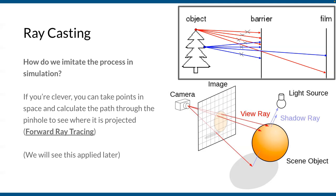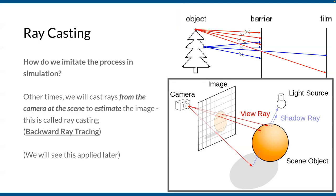One problem with forward ray casting is knowing where to start the rays — your scene can be very large and not all points will reach the camera. So we can do the opposite: backwards ray tracing. Instead of going from the scene to the camera, we start at the camera, go through the image grid pixel by pixel, and see where those rays intersect in the scene.